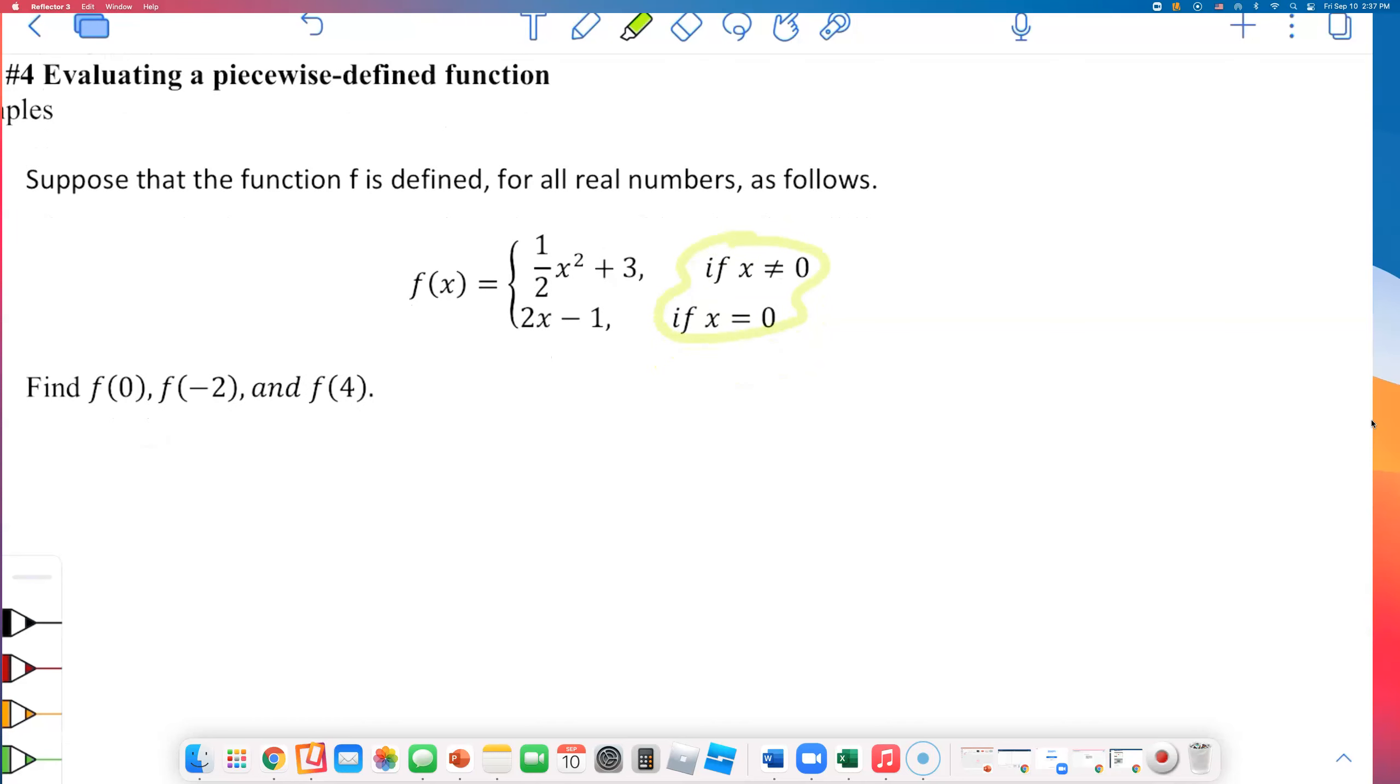So this is what they are telling us. We should be able to read math symbols to know which piece we are plugging these into. I'll start with the bottom one. When X is 0, when they give you an X value of 0, plug it into the bottom piece. But when they give you a number when X is not 0, use half X squared plus 3. When X is 0, use 2X minus 1. That's what this piecewise function is telling us to do.